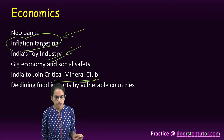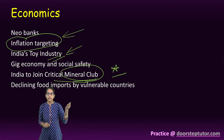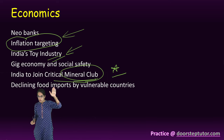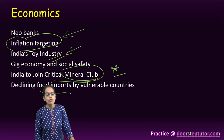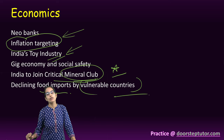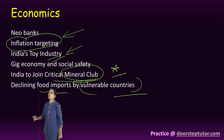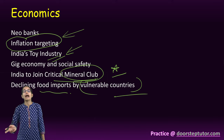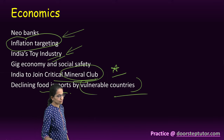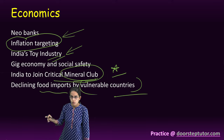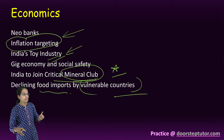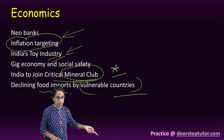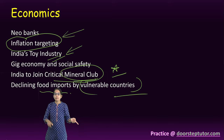India joining the critical mineral club is again an extremely important topic. With rising prices, reducing purchasing power, and declining food imports, what would be the impact on countries already vulnerable or facing acute food crisis — for example, African nations — and what strategy could protect them from these burdens?